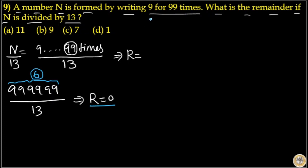6 times 16 equals 96, that means 9 repeated 96 times divided by 13 will give remainder 0. Because 6 goes 16 times in 99, that means 16 sets of 6 nines are there, so that will give you remainder 0.